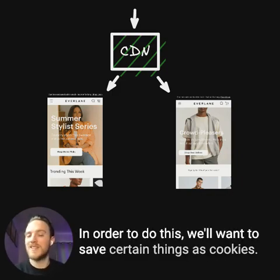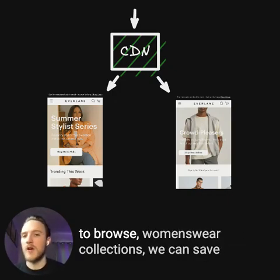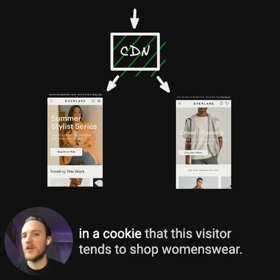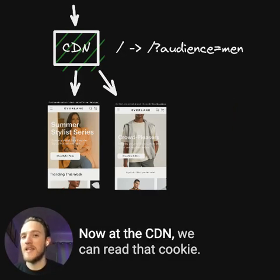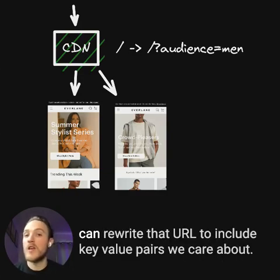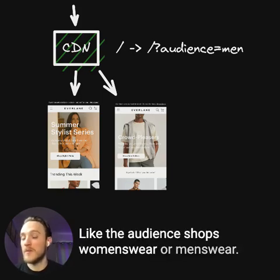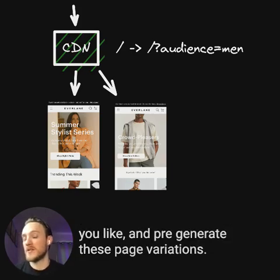In order to do this, we'll want to save certain things as cookies. So when visitors browse the Everlane site, if they tend to browse women's wear collections, we can save in a cookie that this visitor tends to shop women's wear. Now at the CDN, we can read that cookie, and when we see a request coming in for the home page, we can rewrite that URL to include key-value pairs we care about, like the audience shops women's wear or men's wear. You can add as many of these key-value pairs as you like and pre-generate these page variations.